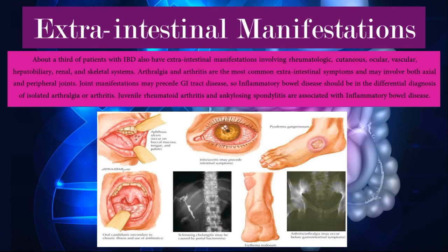About a third of patients with IBD also have extra-intestinal manifestations. These involve rheumatological, cutaneous, ocular, vascular, hepatobiliary, renal, and skeletal systems. Arthralgia and arthritis are the most common extra-intestinal symptoms and may involve both axial and peripheral joints. Joint manifestations may precede GI tract disease, so IBD should be in the differential diagnosis of isolated arthralgia or arthritis. Juvenile rheumatoid arthritis and ankylosing spondylitis are associated with inflammatory bowel disease.